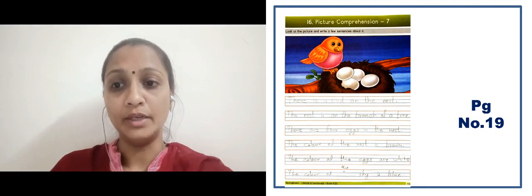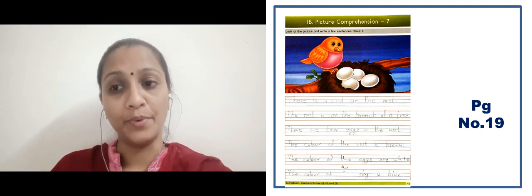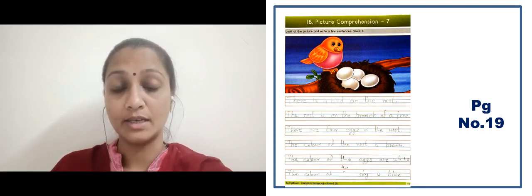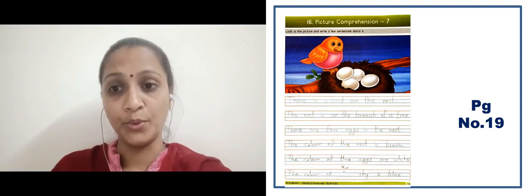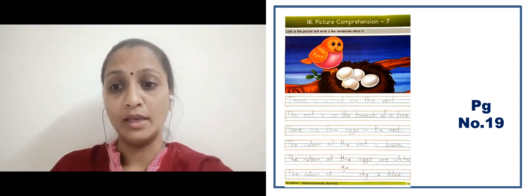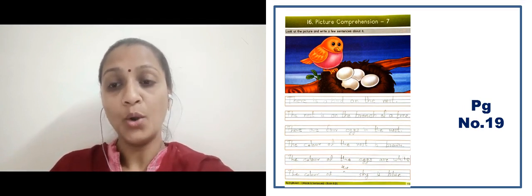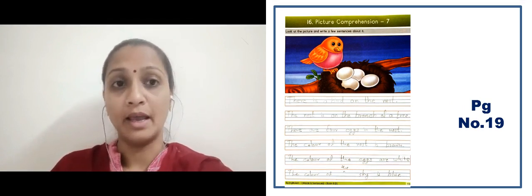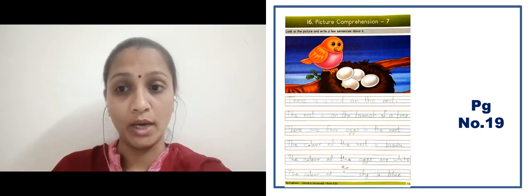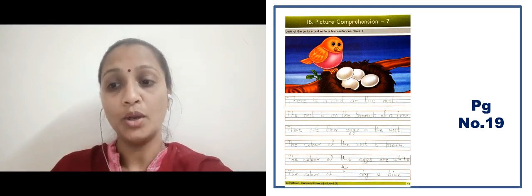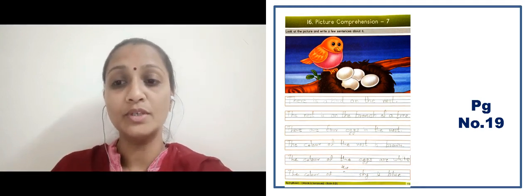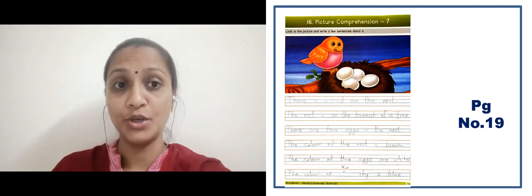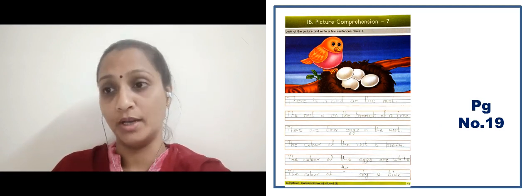The color of the nest is brown — nest ka color brown hai. The color of the eggs is white — eggs ka color white hai. The color of the sky is blue — sky jo hai woh blue color ka hai.